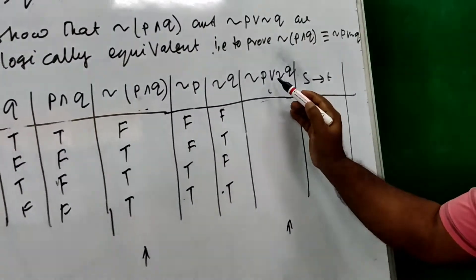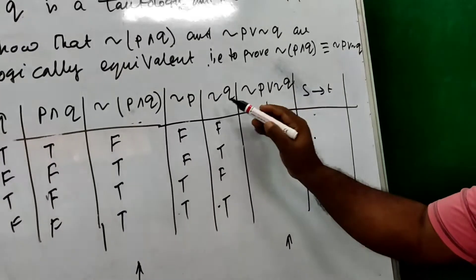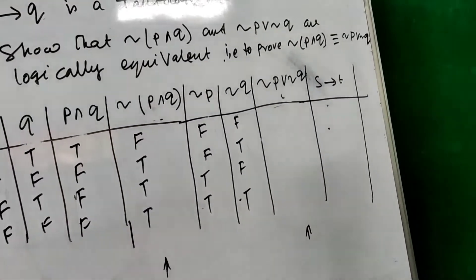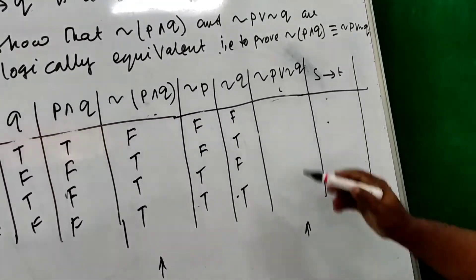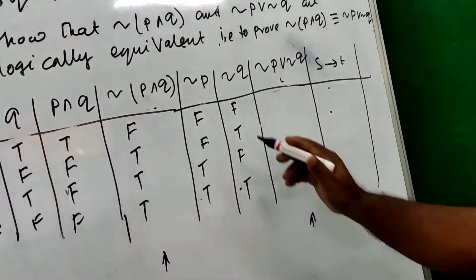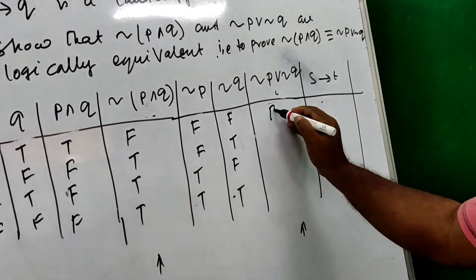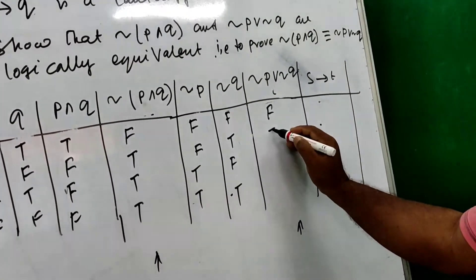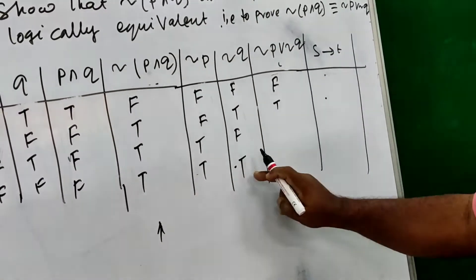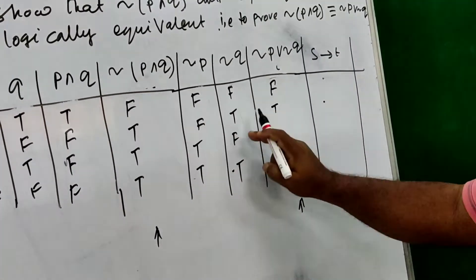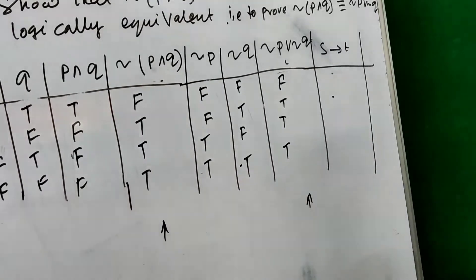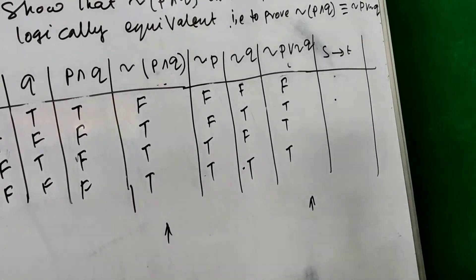Now this and this — that is a disjunction. What is the disjunction rule? If both are false, then it is false; otherwise true. Both are false gives false, otherwise the result is true. So the disjunction column gives: false, true, true, true.